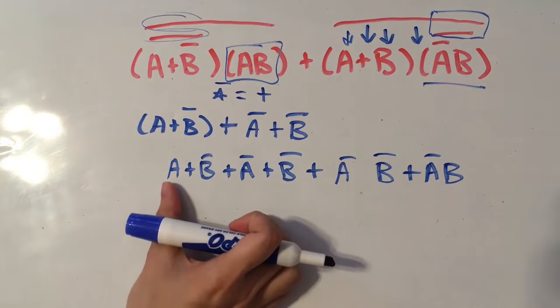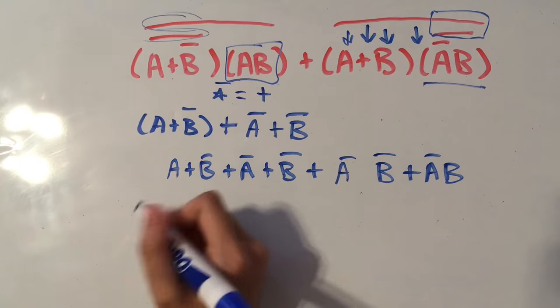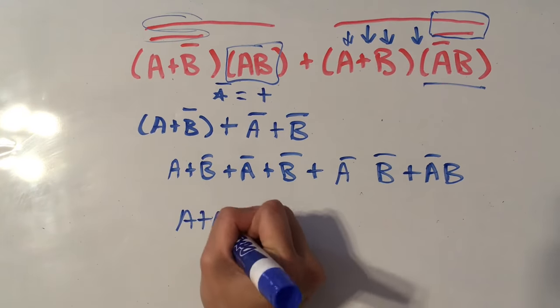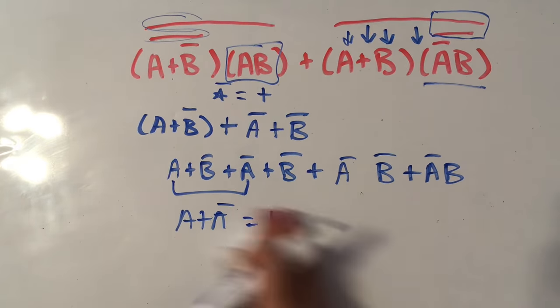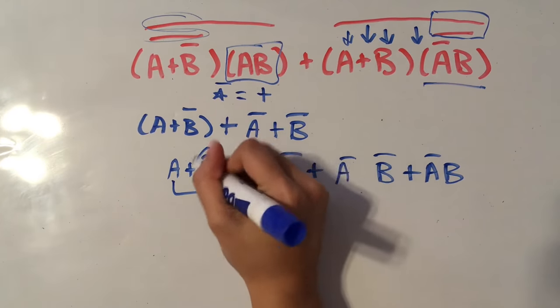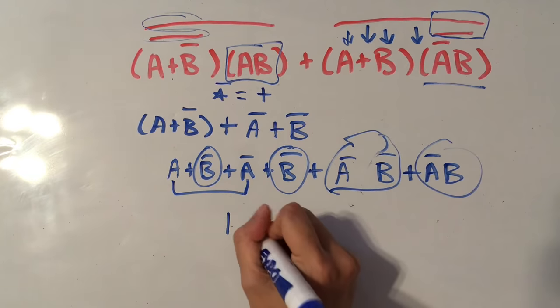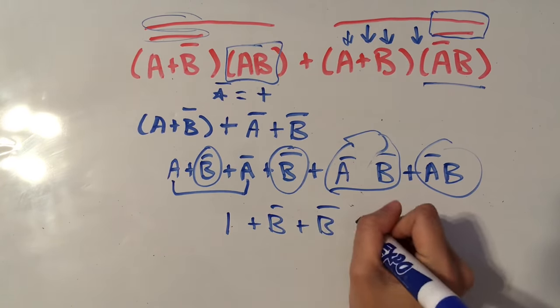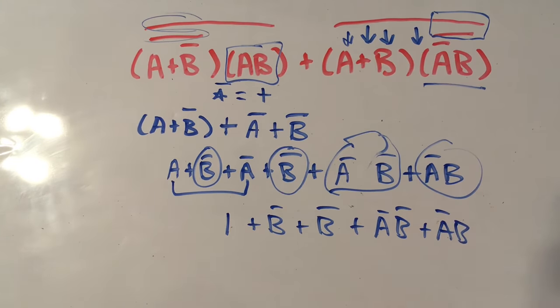And I can see here that we have A plus NOT A. So one of these has to equal zero, and one of these has to equal one. So remember we said before that A plus NOT A equals one. So this can be simplified to just one. And then we have these terms left over. So that's plus NOT B, plus NOT B, plus NOT A NOT B, plus NOT A B. And I can see already that this is going to equal to one, because one plus anything is just going to equal one.